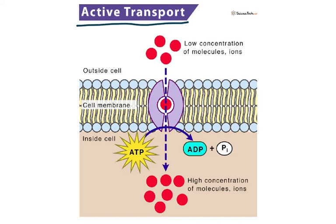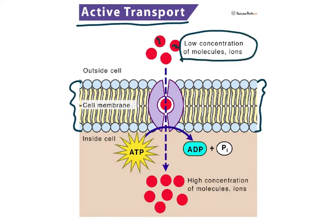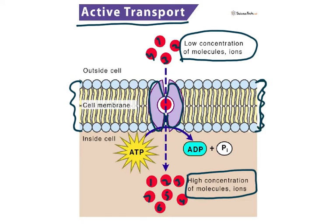Now moving on to active transport. The cell membrane is a phospholipid bilayer. There is a low concentration on one side — say four molecules — and a high concentration on the other side — seven molecules. So active transport moves molecules from a low concentration to a high concentration. A channel protein spans the membrane, embedded in the phospholipid bilayer.